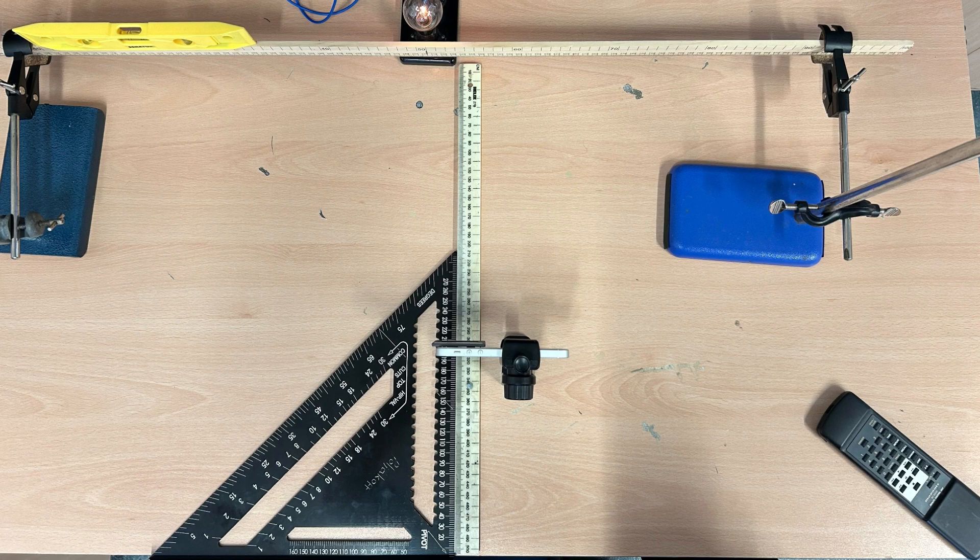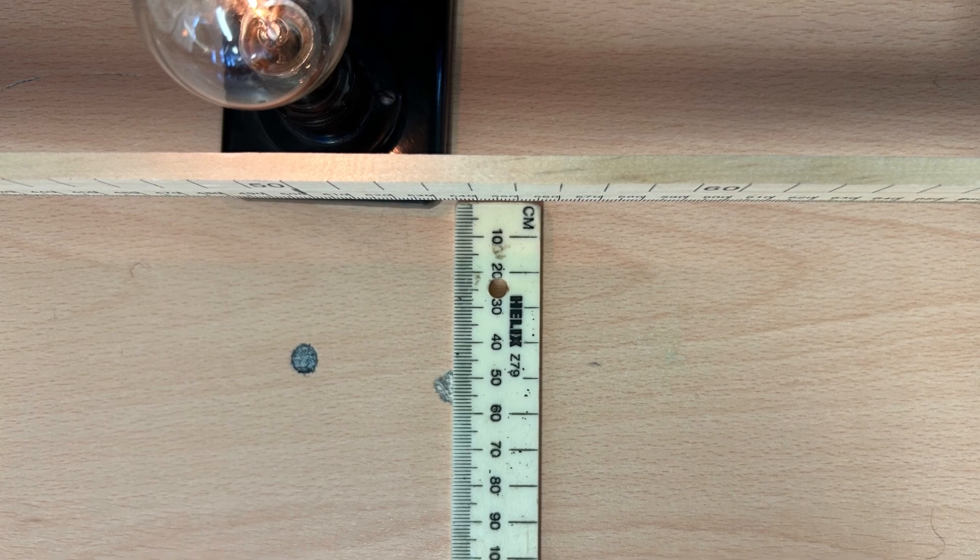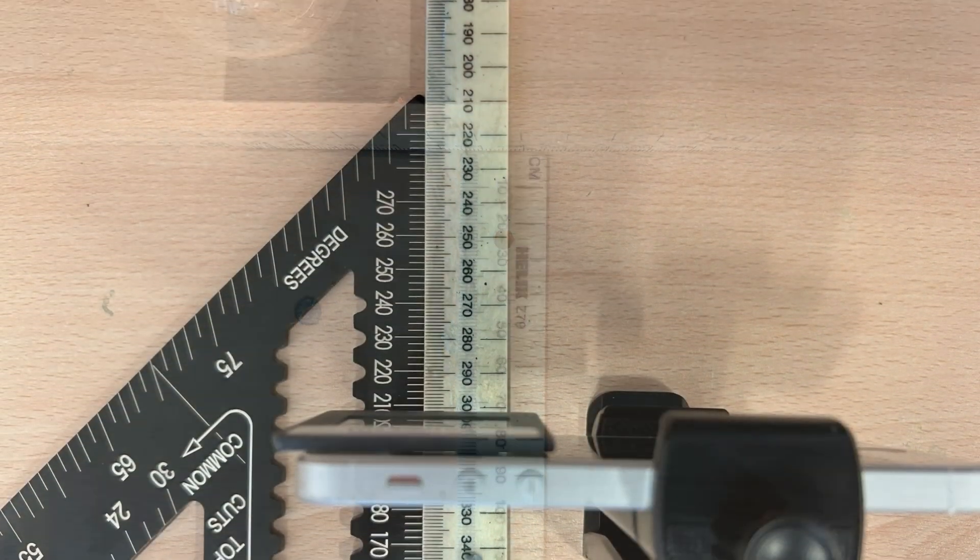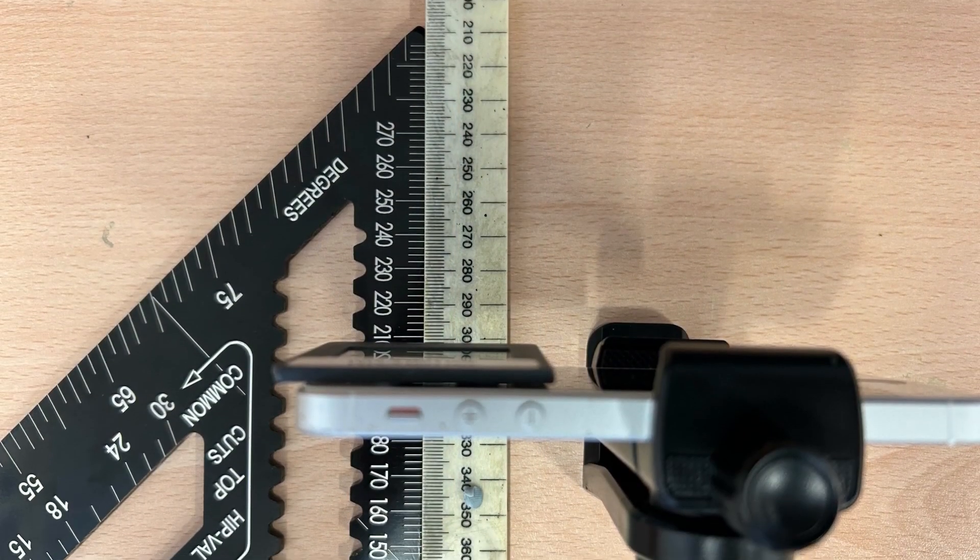And this shows the setup from above. I've used the ruler to make sure that the diffraction grating is exactly 30 centimeters away from the meter ruler.